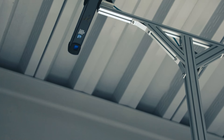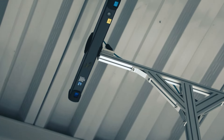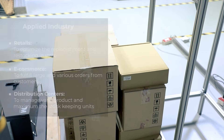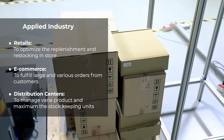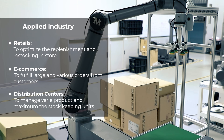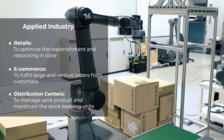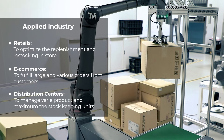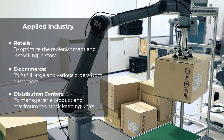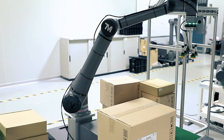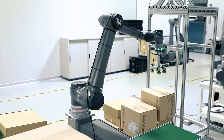Mixed cases depalletizing is a process of separating and handling different types of cases, like boxes, from a pallet to a conveyor. The so-called mixed cases may contain variations in product sizes and shapes. Through the use of advanced technologies such as robotics, AI, and 3D vision systems, the depalletizing system can identify and separate these individual boxes from the pallet.